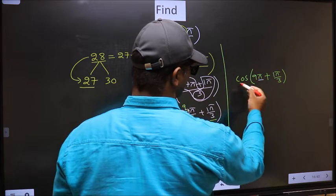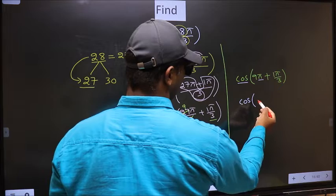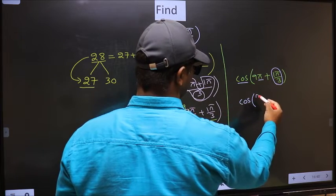Here we have π. So cos is not going to change, it will remain cos. And inside, we get this angle: π/3.